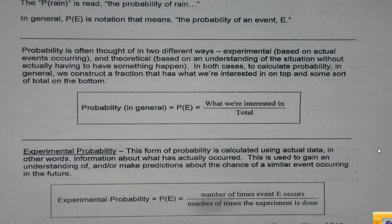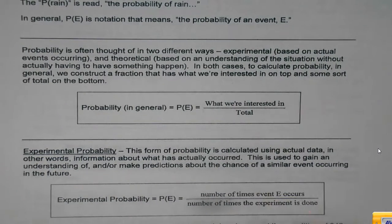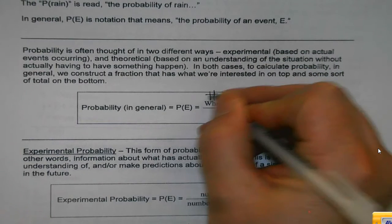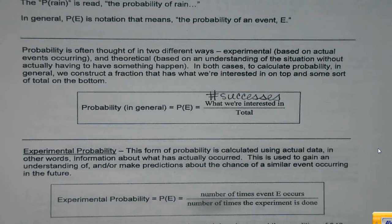But no matter which, this is our little mini formula for probability. What we're interested in, what I like to call the number of successes. I get what I want, whether it's a number on a die, or flipping a coin, or a spinner, whatever it happens to be, over the total number of possibilities. Or the total number of times I do it.